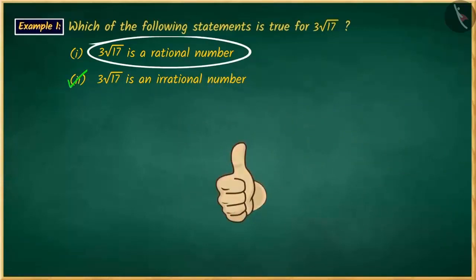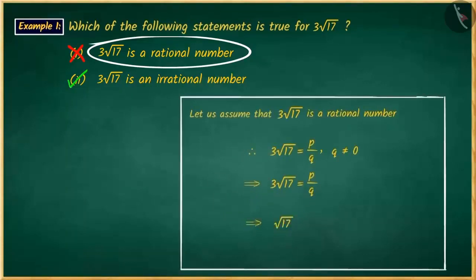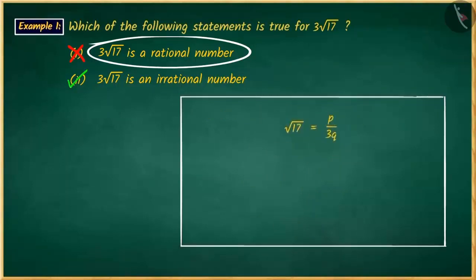If you have chosen the first option, it is a good try, but this answer is wrong. Because if you rearrange it, you will get √17 = p/3q. You have determined that on the right-hand side, p and q are integers.